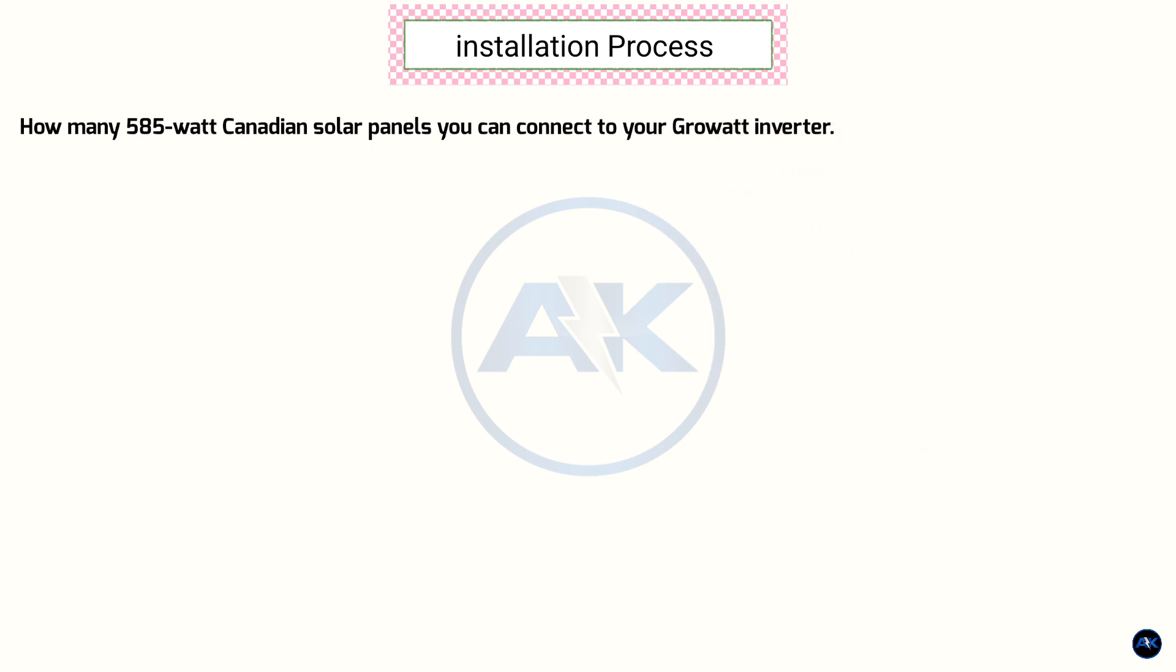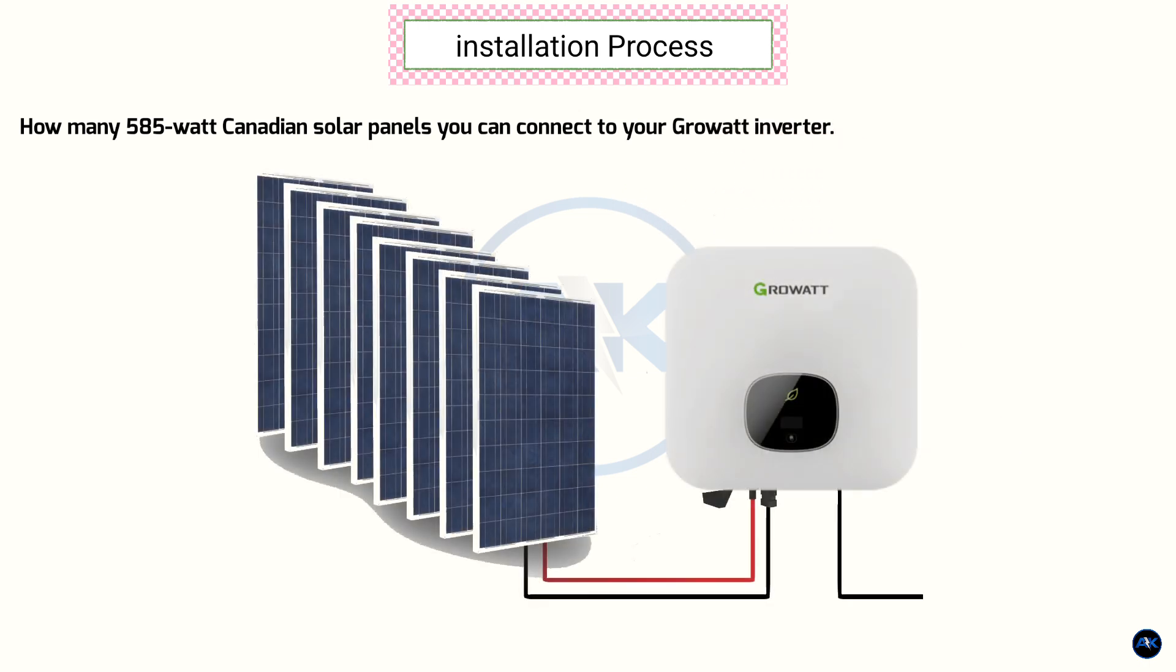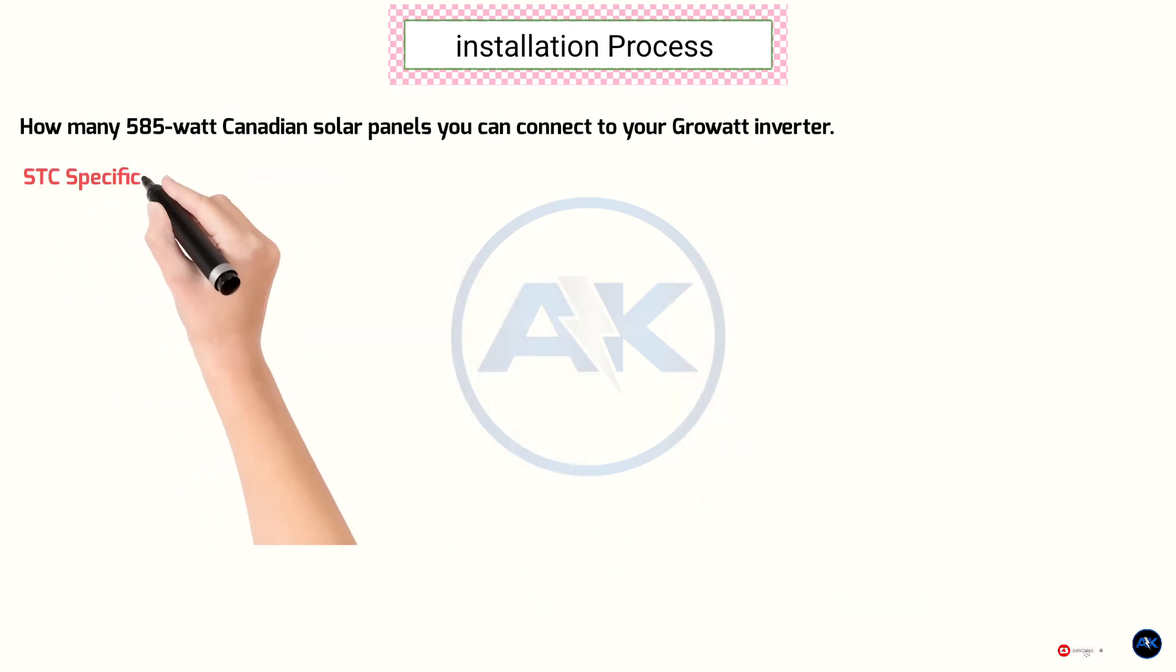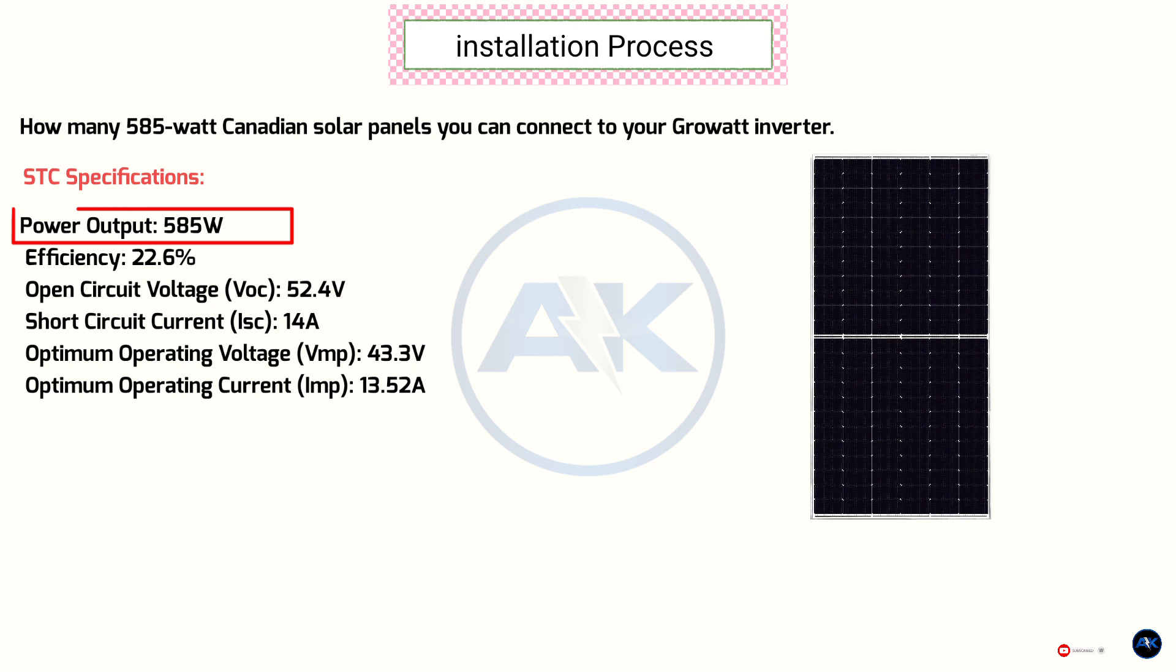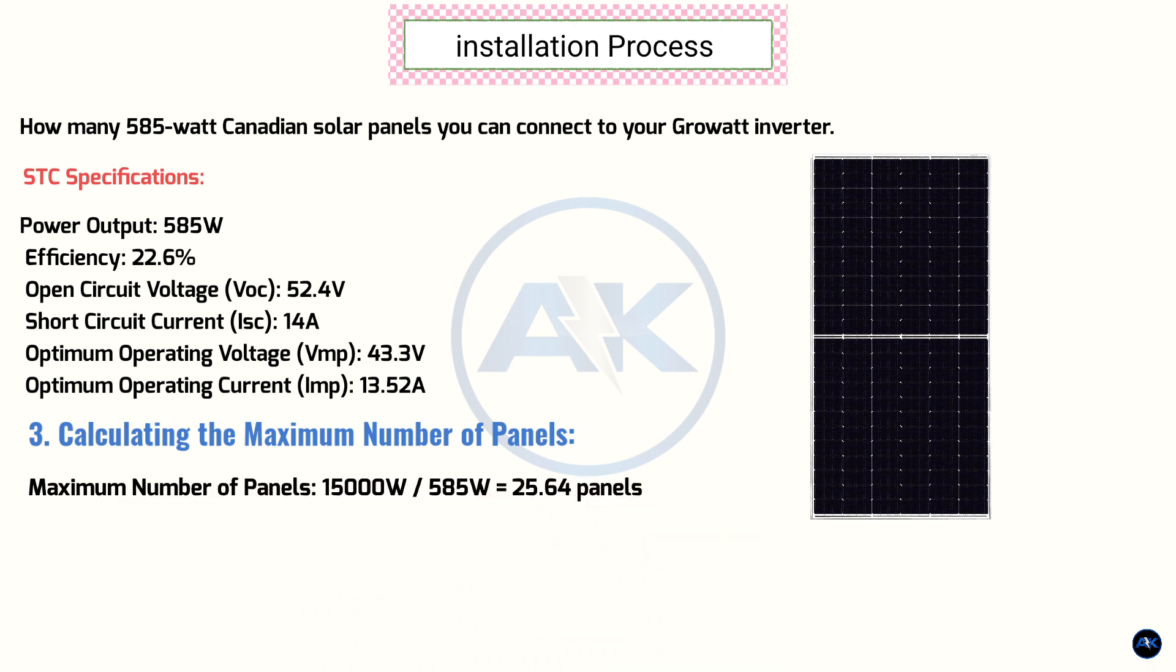Okay, let's figure out how many 580W Canadian solar panels you can connect to your Growat MOD 1000KTL3X inverter. Panel STC specifications: 580W Canadian solar, power output 585W, efficiency 22.6%, open circuit voltage VOC 52.4V, short circuit current ISC 14A, optimum operating voltage VMP 43.3V, optimum operating current IMP 13.52A. Calculating the maximum number of panels: divide the inverter's maximum PV input power by the panel wattage: 15,000 divided by 585 equals 25.64 panels. This suggests you can likely connect a maximum of 26 panels.